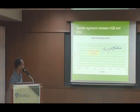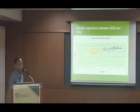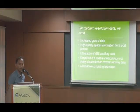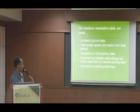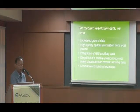This is an example of the weak relationship between above-ground biomass and the normalized difference vegetation index — the R-squared value is very low. For medium resolution data, one solution is to increase the amount of ground data and to use high-quality spatial information from local people, integrate GIS ancillary data, and with the integration of local knowledge, use simplified but reliable methodology and alternative computing techniques.